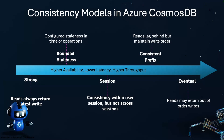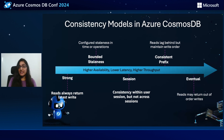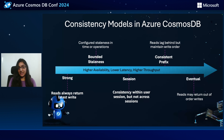One more point: Azure Cosmos DB provides these tunable consistency levels on a per-request basis, allowing engineers to balance latency, throughput, and consistency as per application needs.